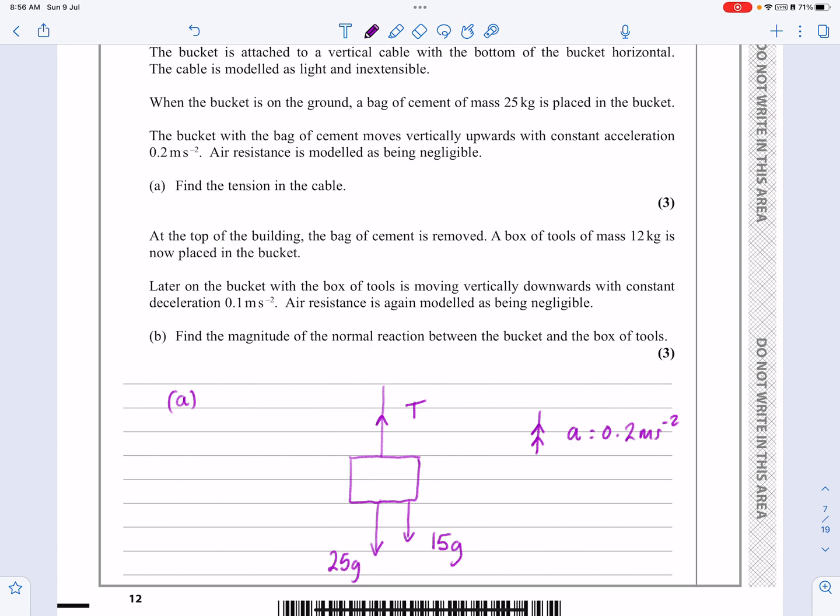Now we've got a box of tools of mass 12 kilograms placed in the bucket. Later on, the bucket is moving downwards this time. OK, so I'm going to need to reassess my diagram here. Yeah, it's going to be moving downwards. Air resistance isn't involved in anything. But now it says, oh, this is horrible, doesn't it? Find the magnitude of the normal reaction between the bucket and the box of tools.